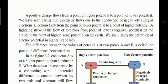A positive charge flows from a point of higher potential to a point of lower potential. We have seen earlier that electricity flows due to the conduction of negative charges — electrons. Electrons flow from a point of lower potential to a point of higher potential.